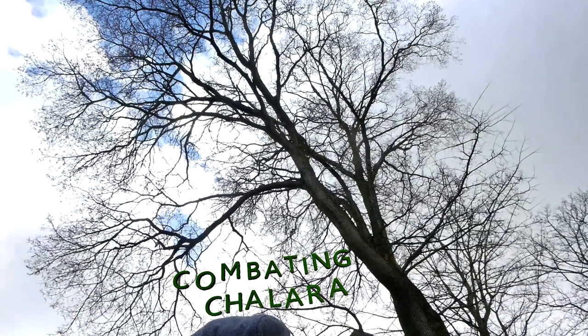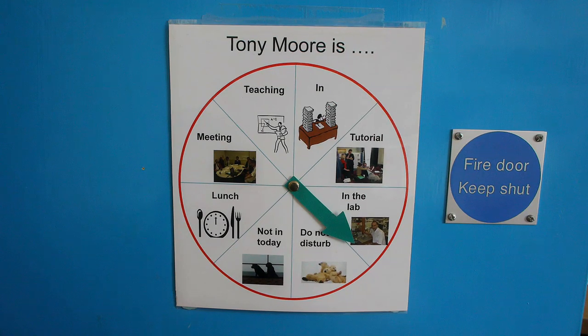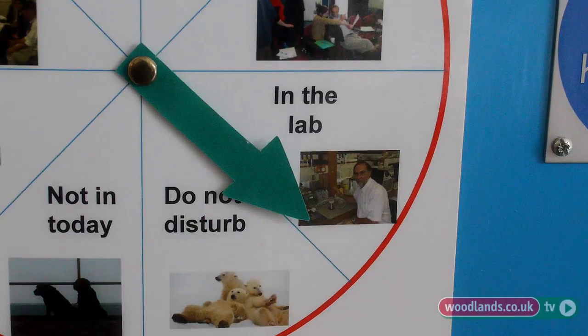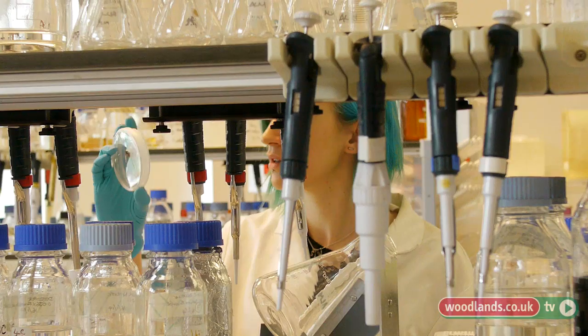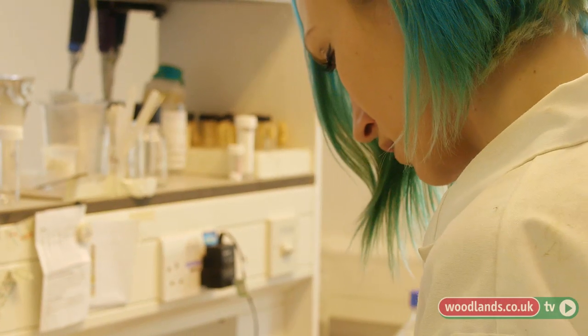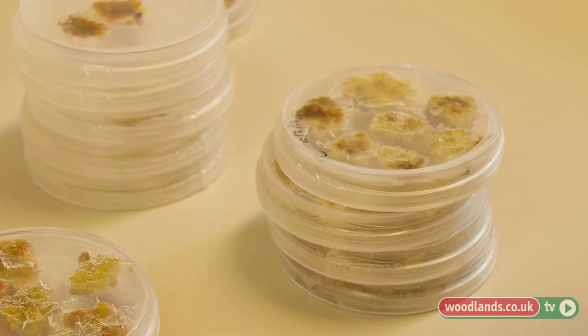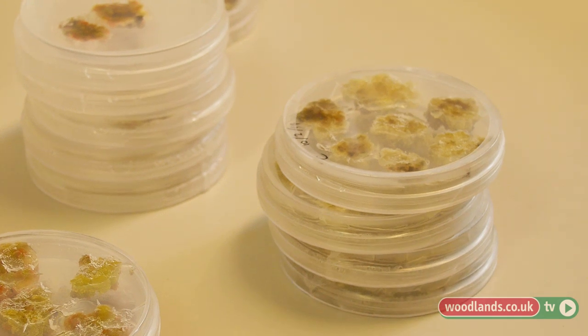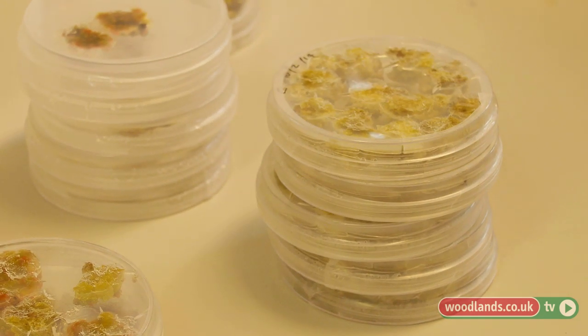Ash Dieback, also known as Hymenoscyphus fraxineus, was first found in Poland back in 1992. Since that time it has become prevalent throughout Europe as the fungus moved westwards, and was recently found in the UK back in 2012. In some senses a lot of people are making the comparison to Dutch Elm Disease, and we know how bad that has been.